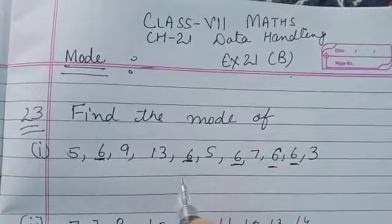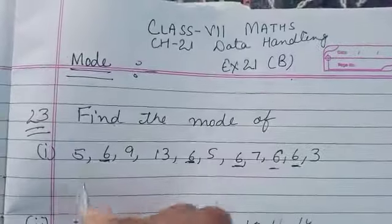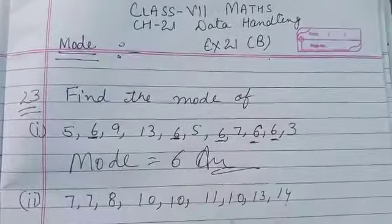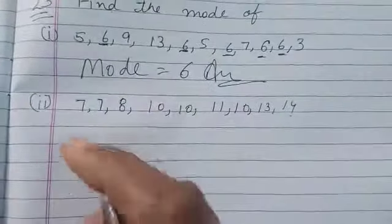So 6 is repeating 1, 2, 3, 4, 5 times. 6 is repeating, so this is the most frequent number. So mode of the given data is 6. That's the answer.